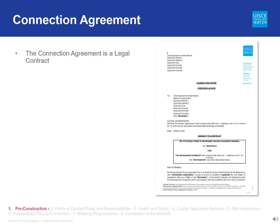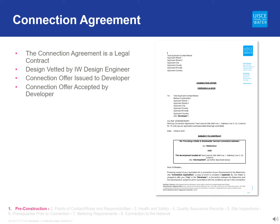Before the pre-construction meeting takes place, the design must be vetted and accepted by Irish Water. The developer must receive a connection offer from Irish Water, must have signed and returned the connection agreement and made full payment including any specified self-lay surety. Any required arterial easements referred to in the special conditions section of the connection offer should be provided to Irish Water. Arterial easements are required where a development is connecting to the Irish Water networks by way of infrastructure not owned by or vested in Irish Water, referred to as arterial pipes. These should be provided as part of the acceptance criteria for the connection offer to avoid delays in connections to the networks at a later stage.